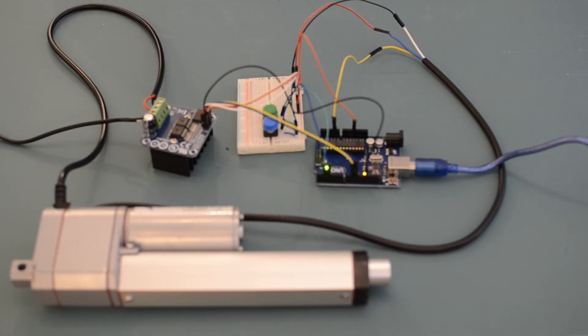To connect the potentiometer feedback to the Arduino, you simply need to plug in the power to 5 volts, the ground to ground, and the output of the potentiometer into one of the analog in-pins of the Arduino.